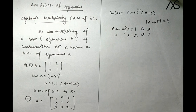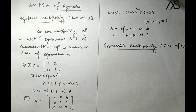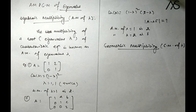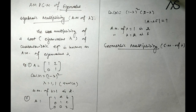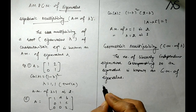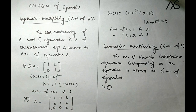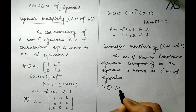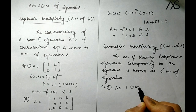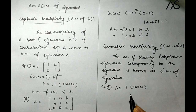Now, geometric multiplicity (GM) of an eigenvalue: the number of linearly independent eigenvectors corresponding to an eigenvalue is known as the geometric multiplicity of that eigenvalue. For example one, where lambda equals 1 appears twice.